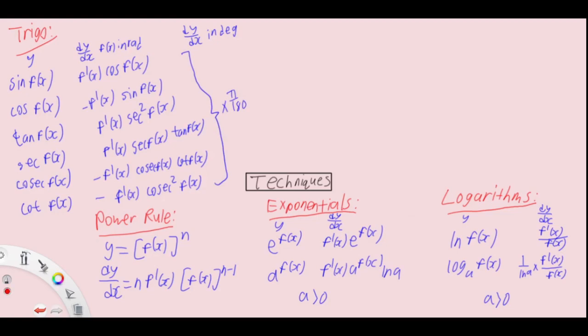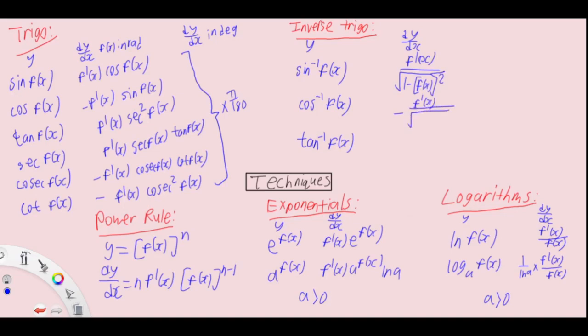Inverse trigonometry has only three types: sine inverse, cosine inverse, and tangent inverse. For sine inverse it's f prime x over root 1 minus fx square. Same for cosine inverse, just with a negative sign. For tangent inverse it's f prime x over 1 plus fx square. For sine inverse and cosine inverse, the modulus of fx must be less than 1.